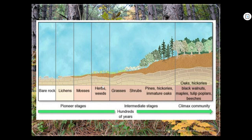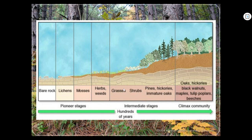Looking at the diagram: herbs and weeds are still part of the pioneer stage, the first living things there. Then you start getting grasses — this is an intermediate stage. Notice the soil is slowly getting deeper and deeper, allowing taller plants to grow. It takes hundreds of years — you couldn't sit around and watch lichen breaking down rock. After grasses, you get shrubs, and then pines, hickories, and immature oaks, since oaks grow pretty tall.